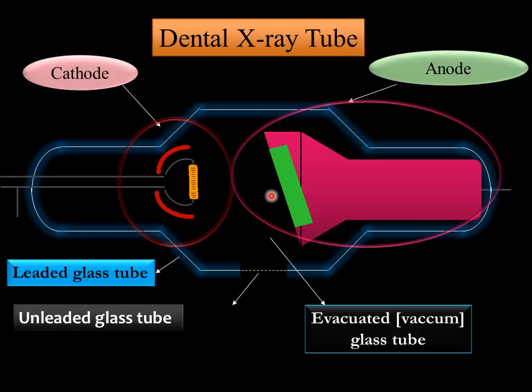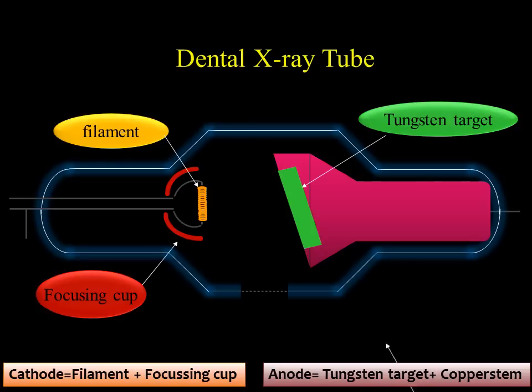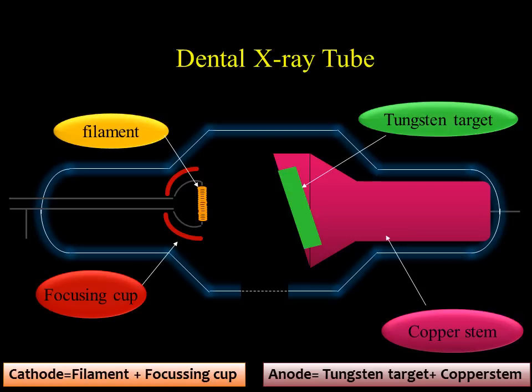The cathode has a filament made of tungsten and a focusing cup made of molybdenum. It has a tungsten target and a copper stem.